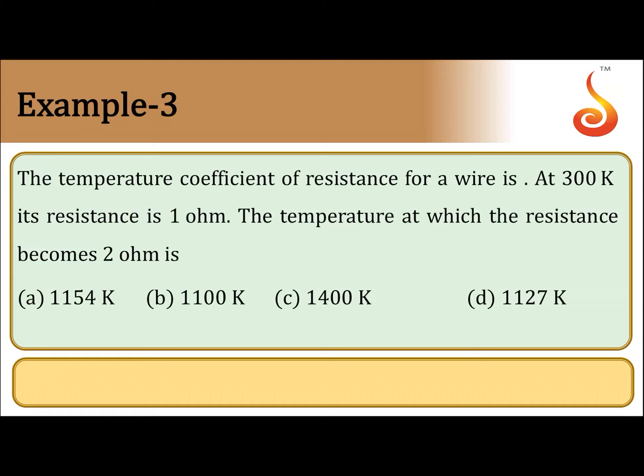Example number 3. The temperature coefficient of resistance for a wire is, data missing here, it should be 0.00125 per degree Celsius. At 300 Kelvin, its resistance is 1 ohm. The temperature at which resistance becomes 2 ohm is,